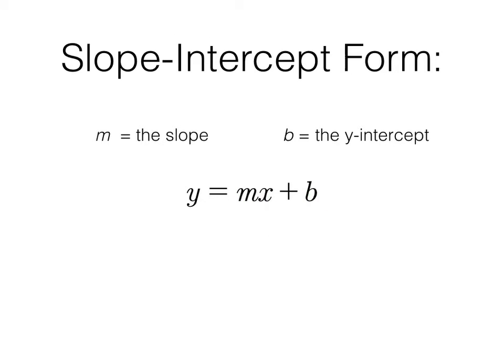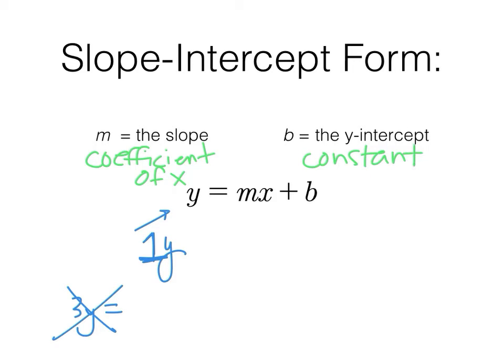Slope-intercept form is only slope-intercept form when it's 1y. It has to be solved for y. You can't have 3y equals and call that slope-intercept form. It has to be 1y equals to be slope-intercept form. And every time you have a linear equation in this format, m is the slope and b is the y-intercept. M is the coefficient of x and b is the constant.